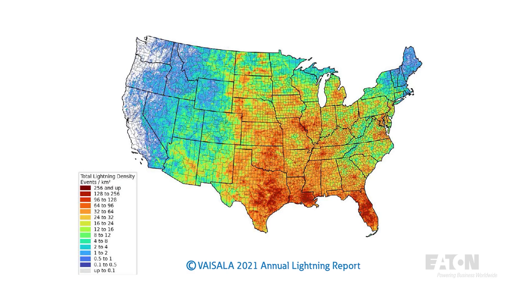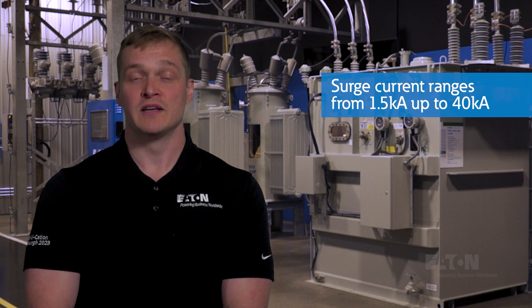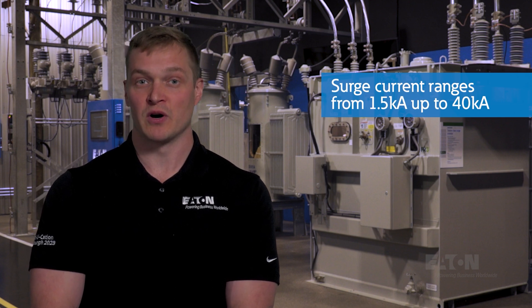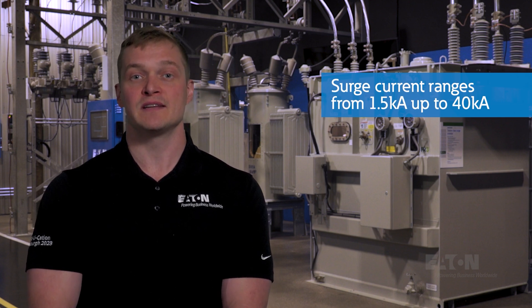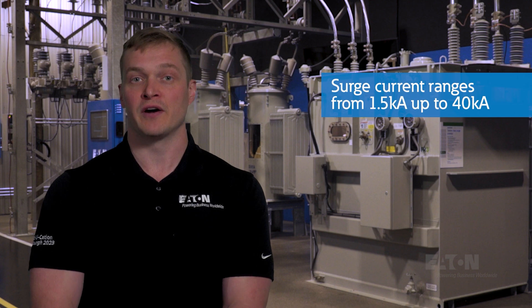The geographical location is also important when sizing an arrestor, due to different lightning patterns. Many organizations publish annual lightning maps that detail intensity and frequency of lightning on a regional basis, so engineers can estimate the total surge current present on a system in a given area. The range of surge current ratings goes from 1.5 kA up to 40 kA, so engineers have to make a judgment call. They need to look at the intensity of lightning in their area and decide what surge current is reasonable.